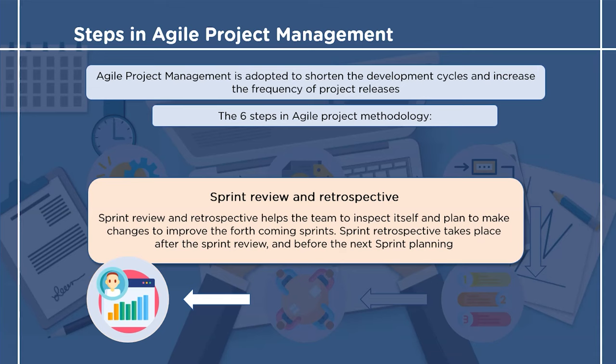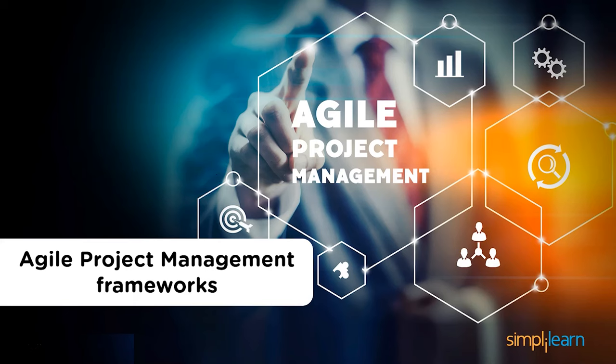The second meeting is the sprint retrospective, which involves the stakeholders discussing what went well and what went wrong during the sprint. The sprint retrospective takes place after the sprint review and before the next sprint planning.